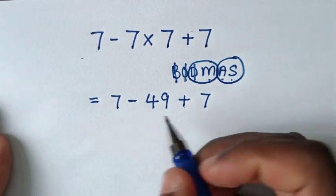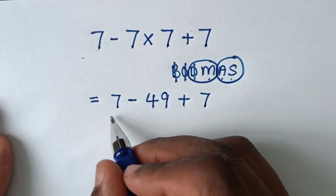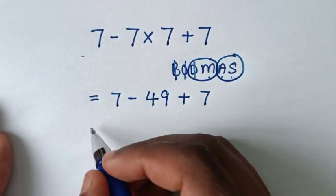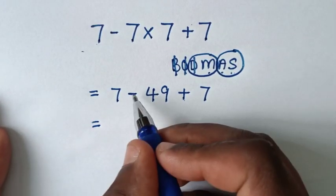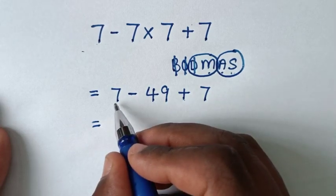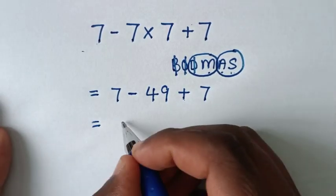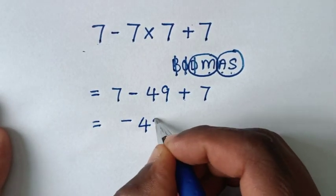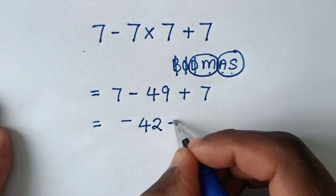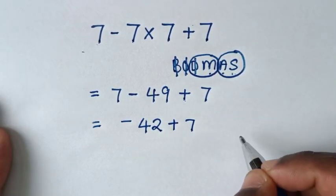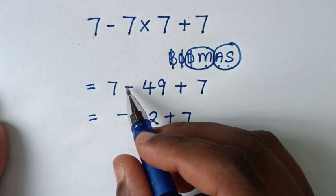We work with addition and subtraction according to which comes first from left to right. It starts with subtraction, so 7 minus 49 is negative 42, then plus this 7.